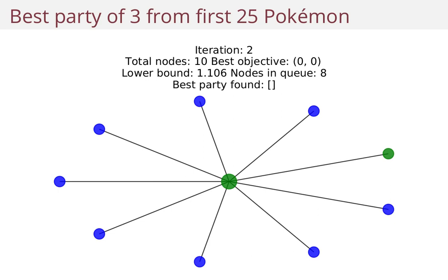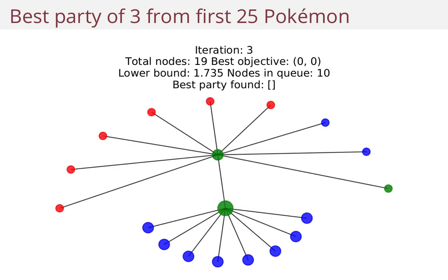And this green node on the right is the next one to be expanded — we expand. And immediately we see some red nodes. These are nodes whose upper bounds are lower than the best lower bound we've seen so far. So there's no reason to consider these red nodes at all.